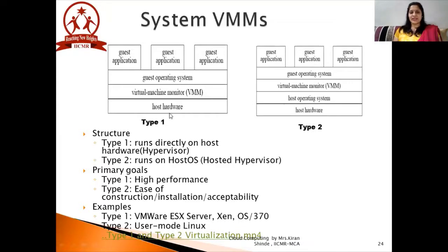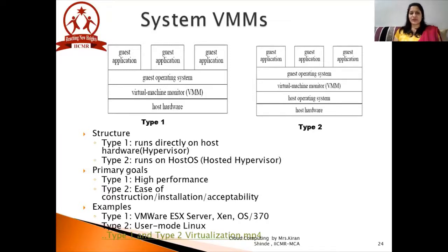As I said, if you want to relate this to our previous video lecture, type one can be categorized as full virtualization and type two as para virtualization. Type one runs directly on the host hardware; type two runs on the host operating system, which is also called a hosted hypervisor. The primary goal of type one is high performance, while type two prioritizes ease of construction, installation, and platform acceptability. Type one examples include VMware ESX Server, Xen, and OS/370. A type two example is User Mode Linux.